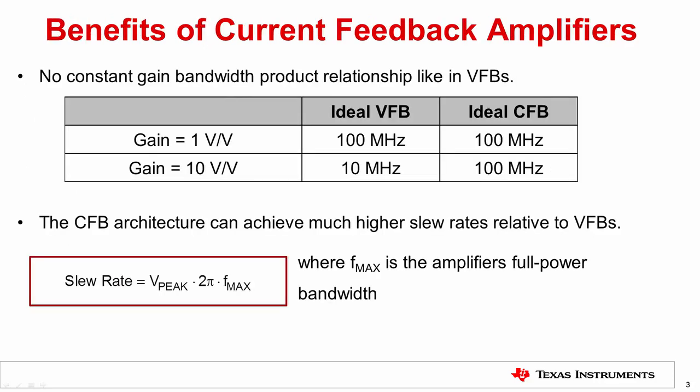Let's now discuss why we need to consider an alternate amplifier architecture to the traditional voltage feedback amplifier. A current feedback amplifier has two primary benefits over a voltage feedback amplifier. A CFB does not adhere to the constant gain-bandwidth product relationship that a voltage feedback amplifier follows. The table shown here illustrates the difference: in unity gain configuration, both amplifiers have a bandwidth of 100 MHz. When the gain is increased to 10 V/V, or 20 dB, the voltage feedback amplifier's bandwidth reduces to 10 MHz, while the ideal current feedback amplifier bandwidth does not change.